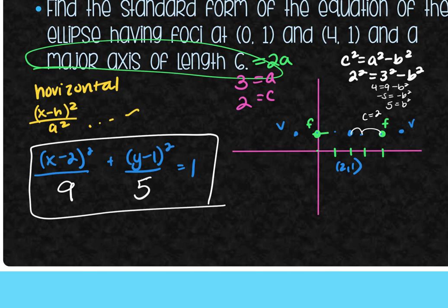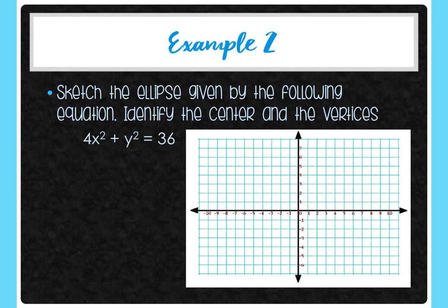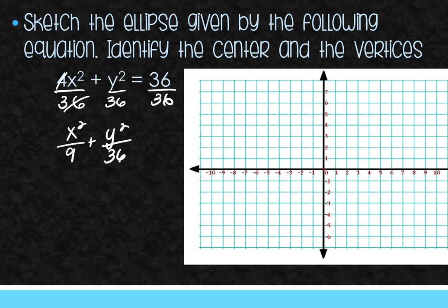Example 2: Given an equation (not in standard form), get all the information out of it. Since an ellipse equals 1, divide everything by 36 to get x²/9 + y²/36 = 1. Now a² = 36 (the larger denominator), so a = 6. Since a² is under the y, this is a vertical ellipse. The center is (0,0) and b² = 9, so b = 3.